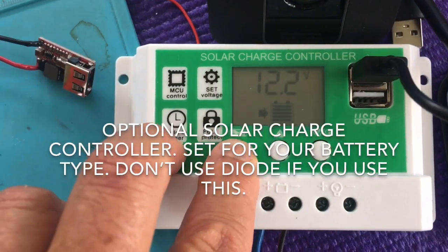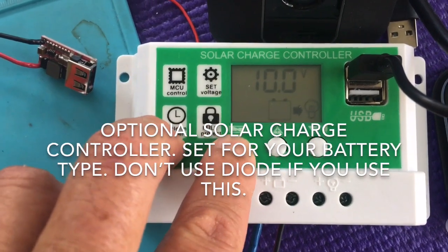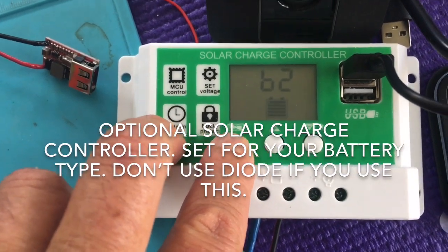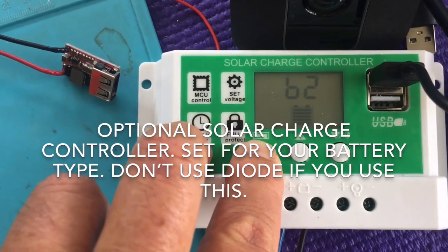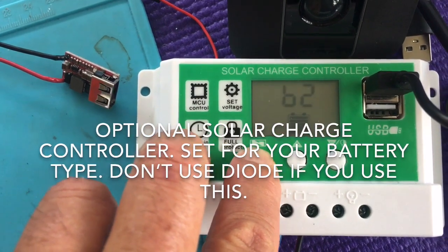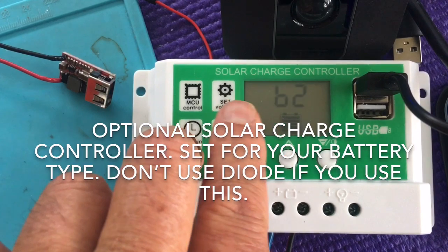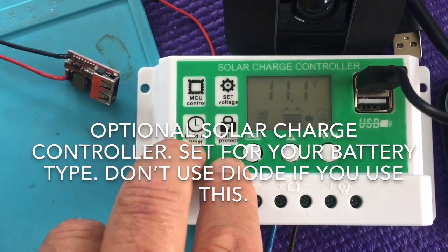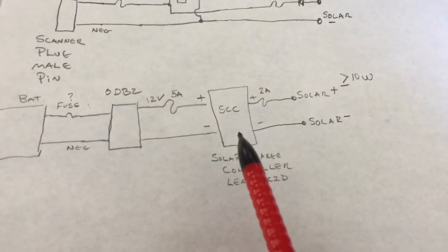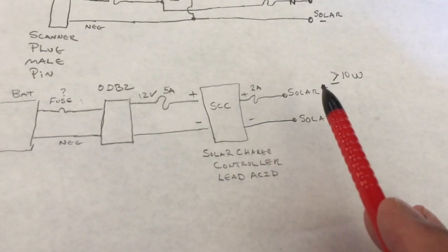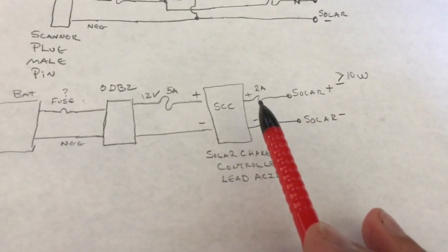But this time we're going to have that solar charge controller, can be set here in this B setting and you just hold down the B setting and it allows you to set different battery types.